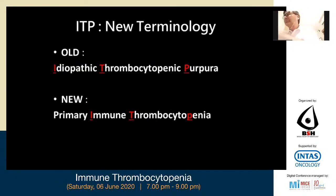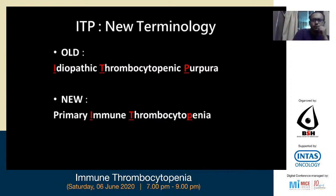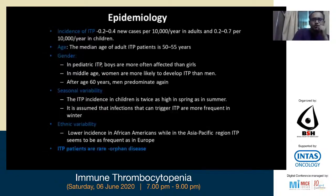As Dr. Sharmila Chandra, our Honorable Chairman of the Bengal Society of Hematology, has told, the terminology has changed. The old term was idiopathic thrombocytopenic purpura; now it has changed to primary immune thrombocytopenia — the new naming of the disease. Coming to the epidemiology of newly diagnosed ITP, the incidence is very low.